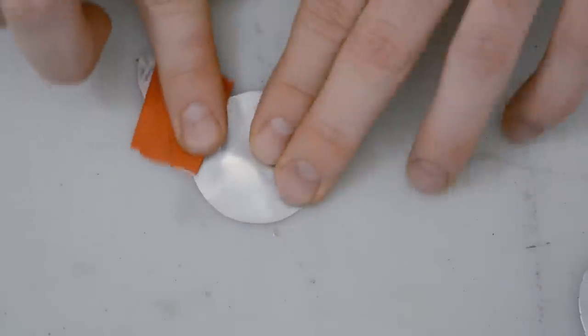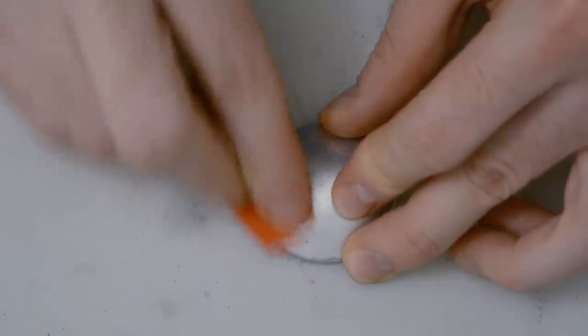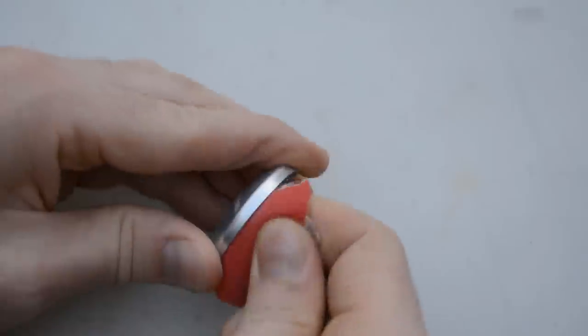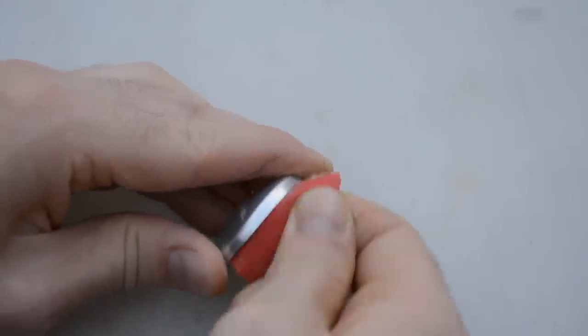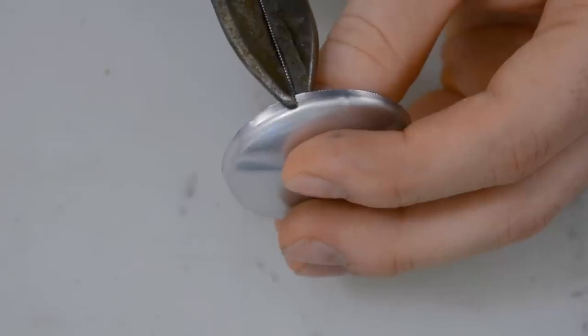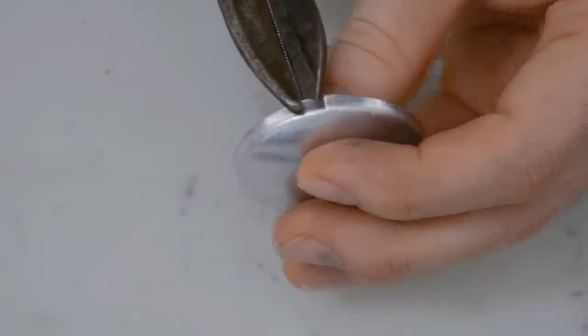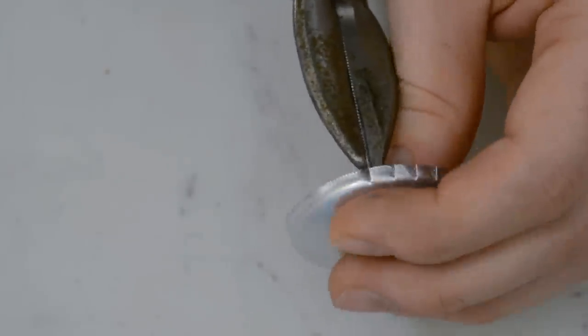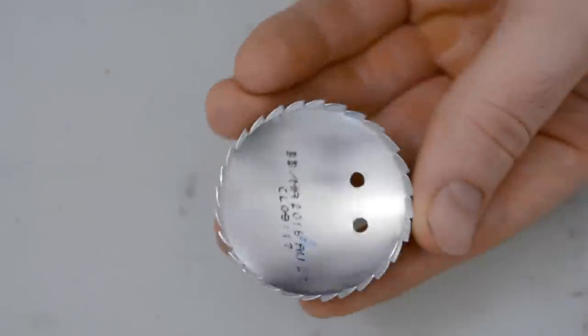Using some coarse grit sandpaper, we're going to scuff up all the areas that are about to be epoxied. This just helps the epoxy bite into the surface a little better. The last thing we're going to do to this piece is make about thirty evenly spaced cuts along that outer lip, and you'll see how these are used in just a minute.